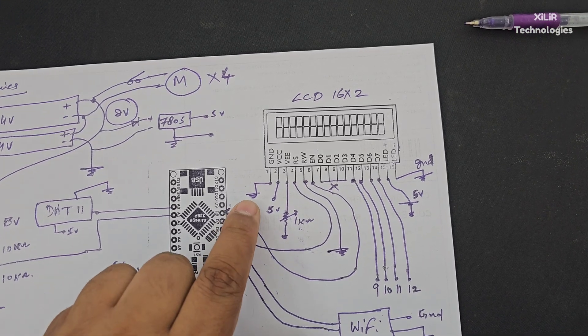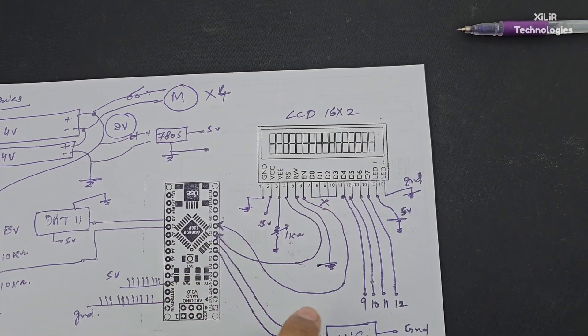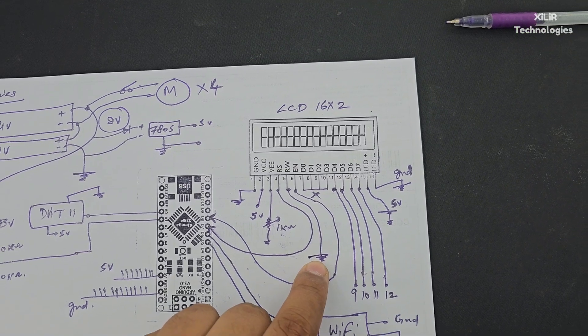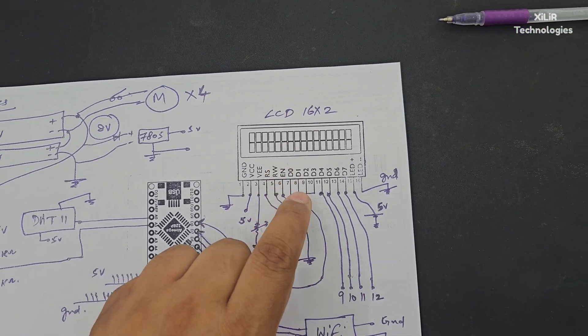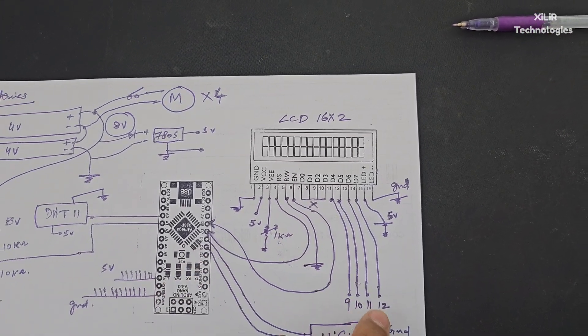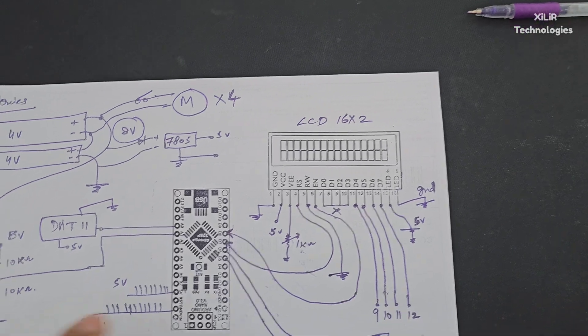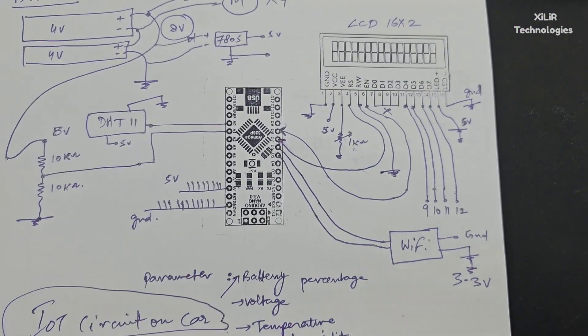For the LCD we have to connect all things like ground, 5 volt, potentiometer, then this pin to pin 7, then this pin to ground. Four pins empty because we are using 4 bit mode, so no connections here. Then we have 9, 10, 11, 12 for sending the data. Then we have 5 volt and ground, so we have to connect all these things on your Nano. Like this it will work.